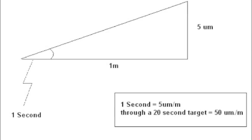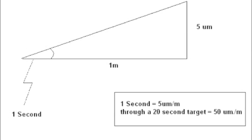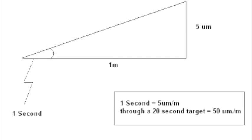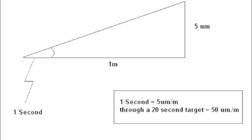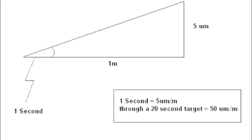With a two-second target you could get a maximum of one second refraction and with the twenty-second target you could get ten seconds. An important number for you is that one second is approximately five microns per meter. So if you happen to leave a twenty-second target in place you could get an error of fifty microns per meter.